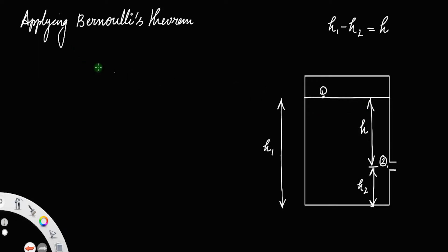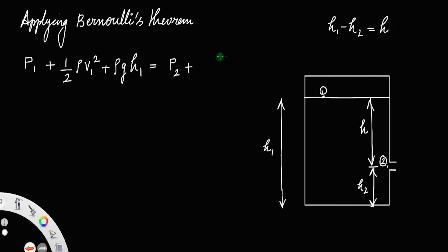We have: pressure energy per unit volume plus half rho v1 squared (kinetic energy per unit volume) plus rho g h1 (potential energy per unit volume) at point 1, is equal to the corresponding terms at point 2: half rho v2 squared plus rho g h2. Here v2 is the velocity of the liquid coming out of the hole, called the velocity of efflux, and rho is the density of the liquid.